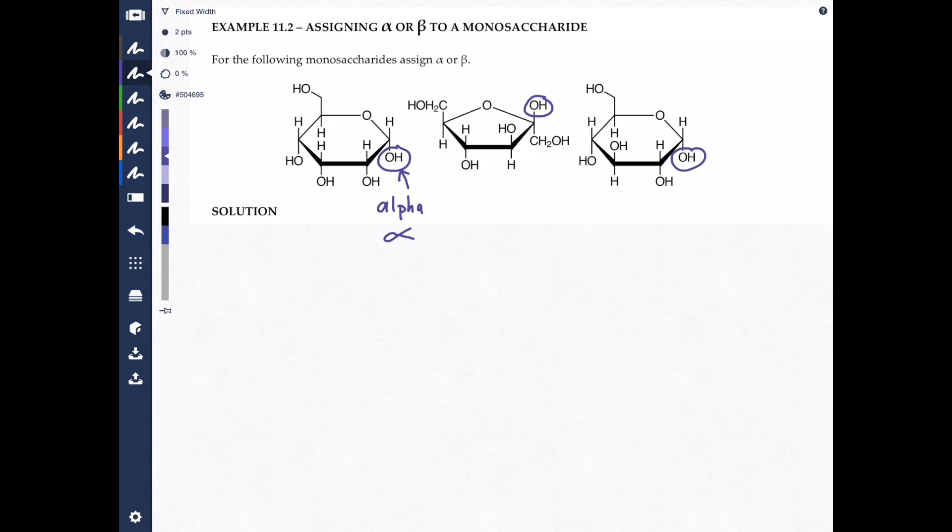So if on the anomeric carbon, the OH is down, if on the other hand, the OH is up, such as we have right here, then this can't be alpha, this must be beta. And that's simply beta, because there's the Greek letter B, beta, excuse me. It's beta, because the OH is pointing up on the anomeric carbon, which is the carbon that is to the right of the oxygen in the ring.